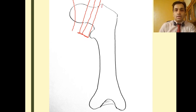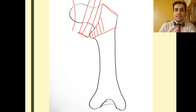Moving on, a fracture line between the two trochanters — the lesser trochanter and the greater trochanter — is said to be in the intertrochanteric region.